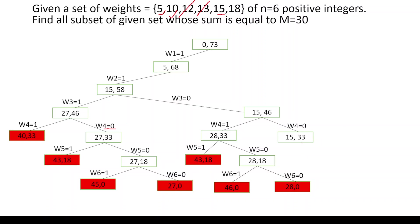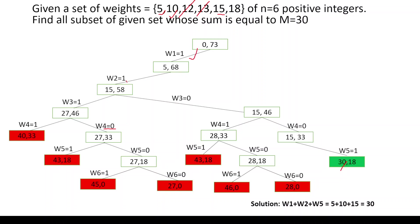With w4 not added, we can add w5. When we add w5 we get the sum of the subset as 30 — exactly what we wanted — with only 18 remaining. So this is one solution to the sum of subset problem for the given set 5, 10, 12, 13, 15, 18. The solution is: add w1, add w2, don't add w3, don't add w4, but add w5. With w1, w2, and w5 added, you get 5+10+15, which equals 30.